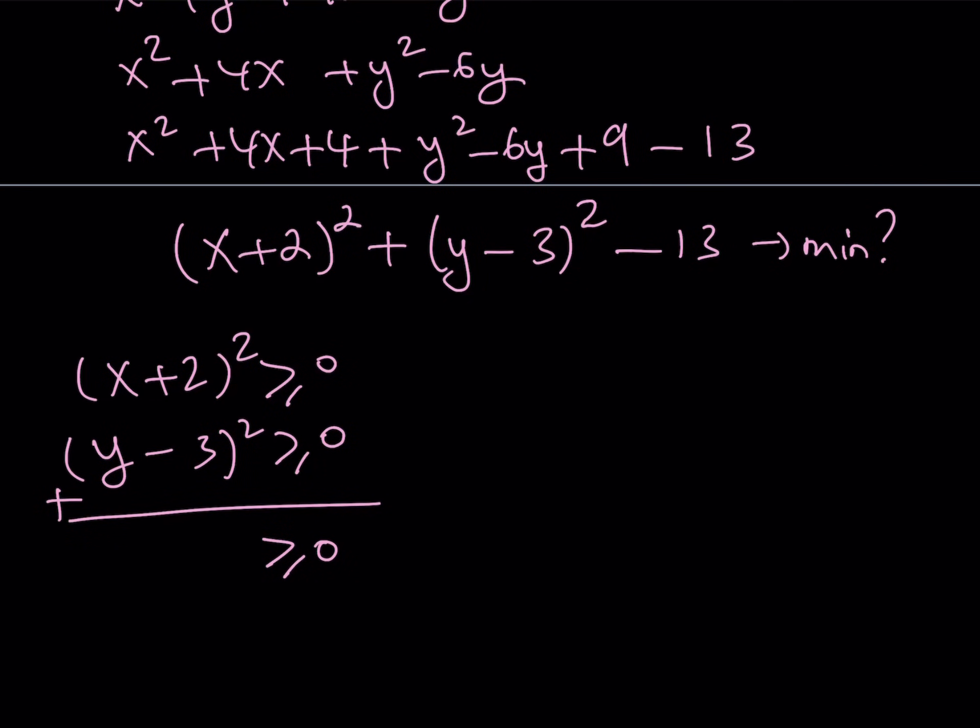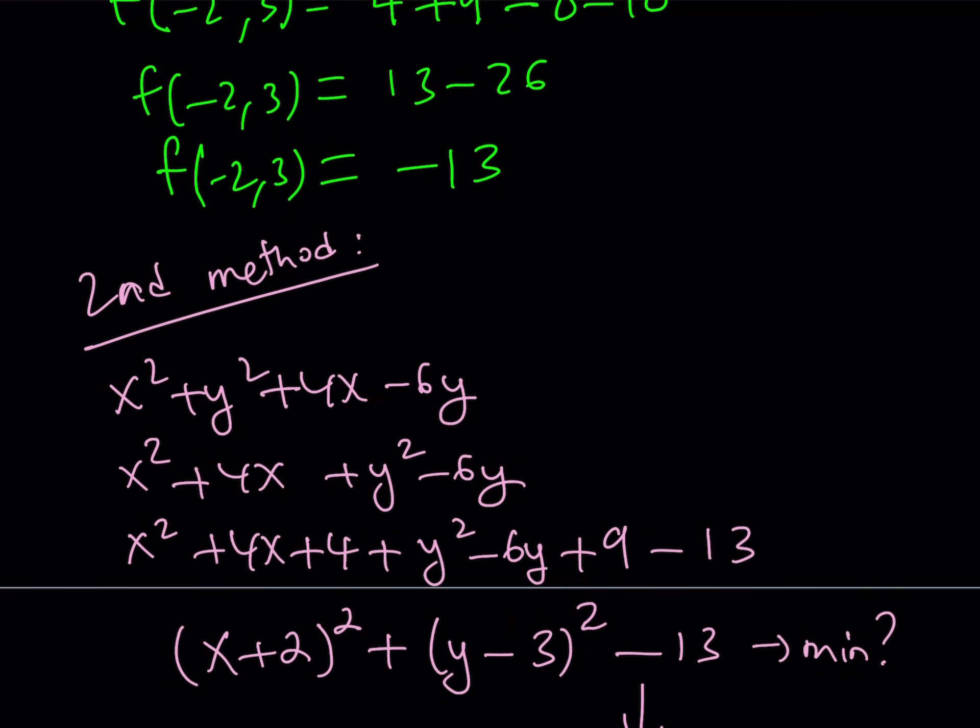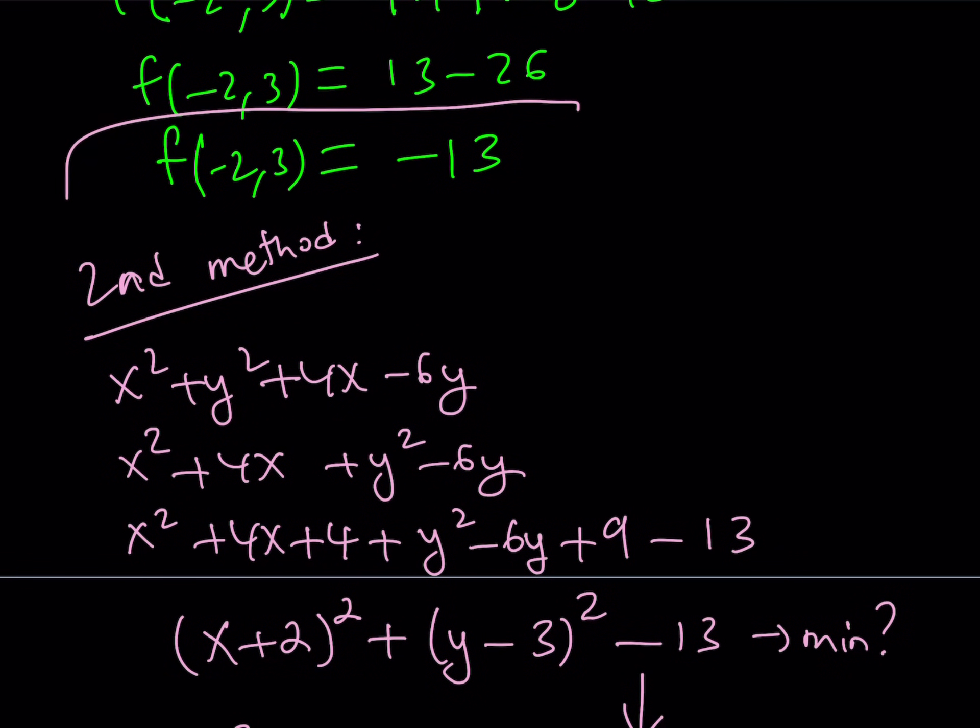So you have something that has 0 as a minimum value. So the minimum value is basically going to be determined by the constant here. So the minimum value of our function is going to be negative 13 as before. So the minimum value for our expression is going to be negative 13.